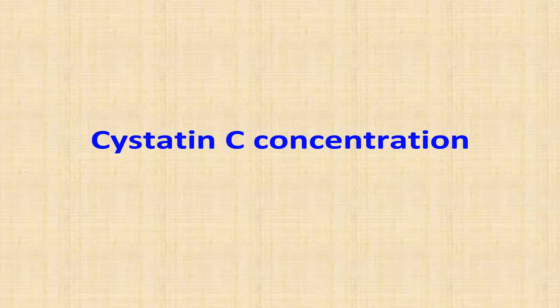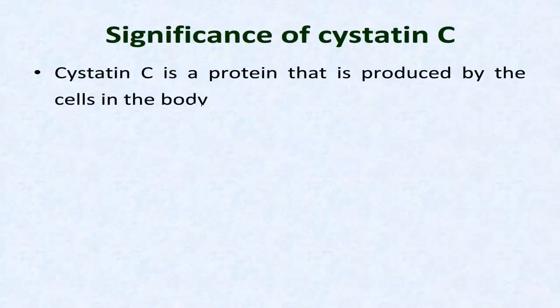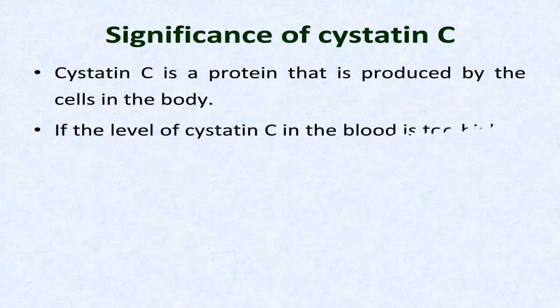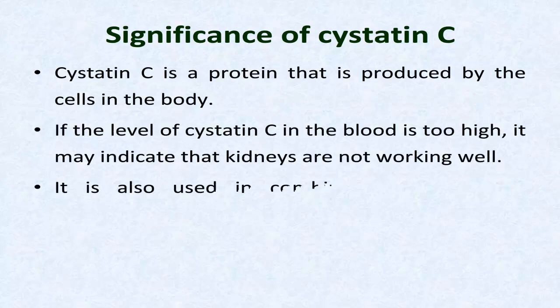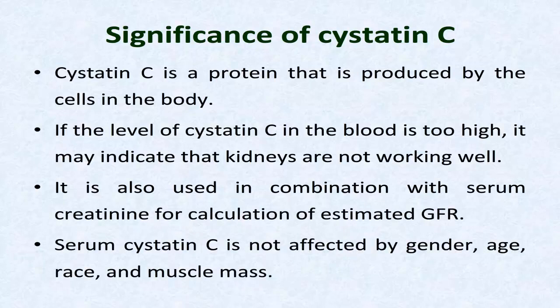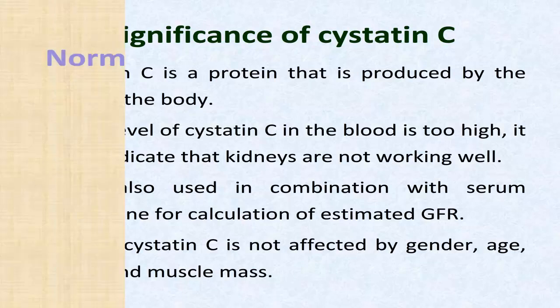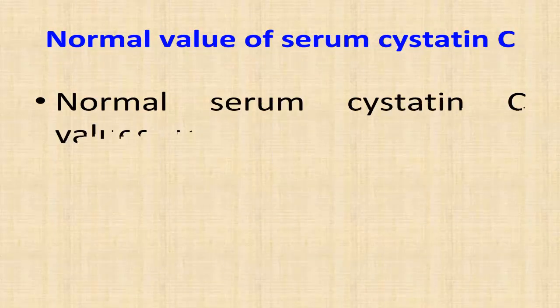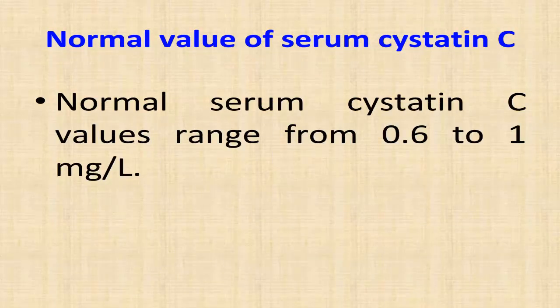Cystatin C concentration: cystatin C is a protein that is produced by the cells in the body. If the level of cystatin C in the blood is too high, it may indicate that the kidneys are not working well. It is also used in combination with serum creatinine for calculation of estimated GFR. Serum cystatin C is not affected by gender, age, race, or muscle mass. Normal serum cystatin C values range from 0.6 to 1 milligram per liter.